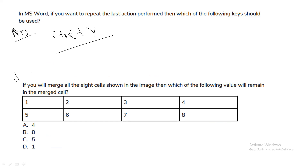If you merge all eight cells shown in the image — cells containing values 1 through 8 — which value will remain in the merged cell? When you merge all the cells, only the content of the first cell is retained. So option D — the first cell's value — will be the correct answer.